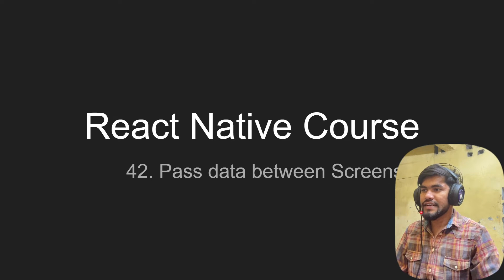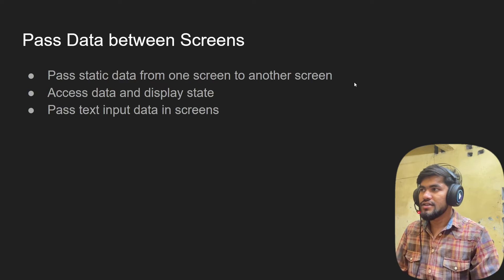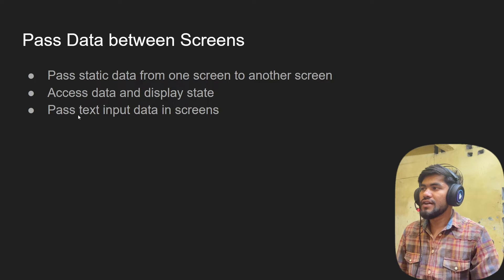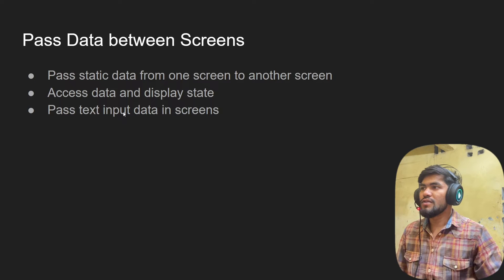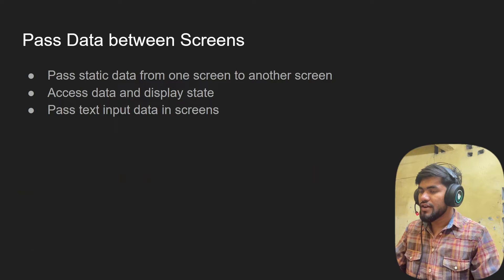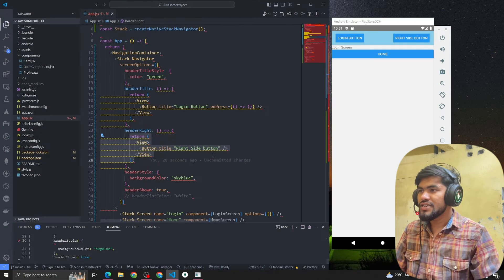Hey guys, welcome back to the React Native course. In this video we are going to talk about how to pass data between screens — from one screen to another. We're going to pass static data from one screen to another, access that data, and display it. We'll also have a text input, and whenever we click a button we'll pass the data from one screen to another screen.